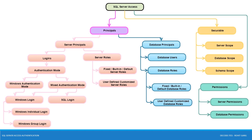We have completed the Principals component of SQL Server Access Authentication. The next component is Securables. Securables are objects on which permissions can be granted, and are of three types based on their scope: server, database, and schema. Server scope refers to server objects like Always On, endpoints, and logins. Database scope refers to database objects like keys, schemas, roles, full-text catalog, and users. Schema scope includes tables, views, and stored procedures.